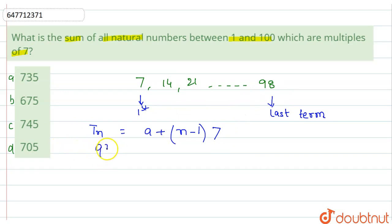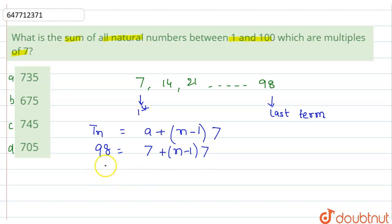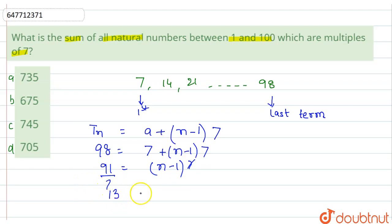Last term हमें मिल चुका है: 98. तो यहाँ हम 98 लिखते हैं, और इधर a यानिकी 7, plus (n-1) multiplied by 7. 7 minus करेंगे, 91 आया. फिर n-1 multiplied by 7, और 7 इधर आया. तो 13 is equal to n-1, which means 14 is equal to n. तो number of terms = 14 मिल गए.